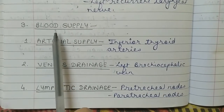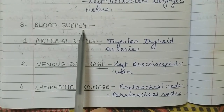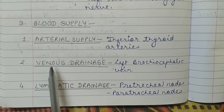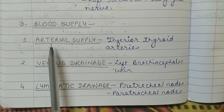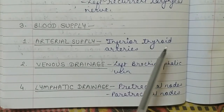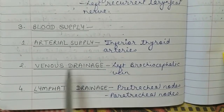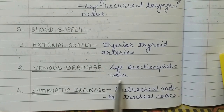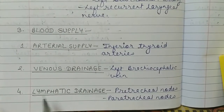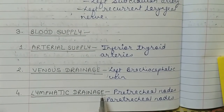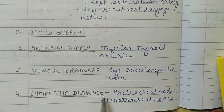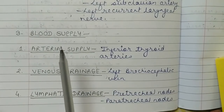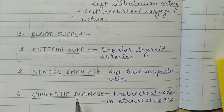Third point is the blood supply of trachea. Arterial supply: trachea ko inferior thyroid arteries blood supply karti hain. Venous drainage: trachea ka venous blood left brachiocephalic vein mein drain hota hai. Fourth point is lymphatic drainage: trachea ka lymph pre-tracheal nodes and para-tracheal nodes mein drain hota hai.